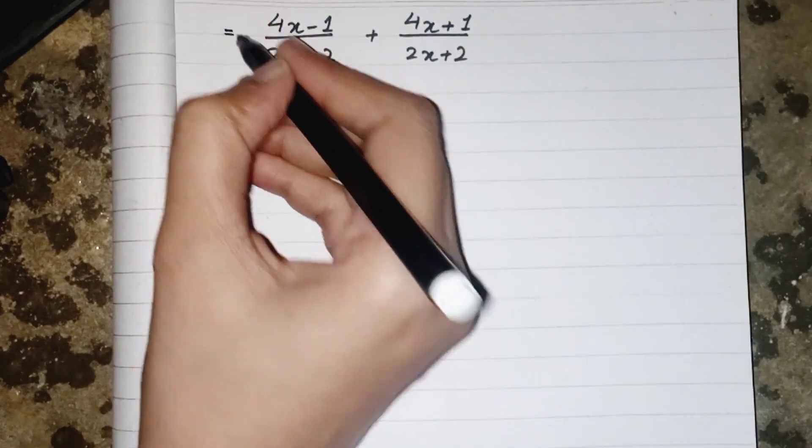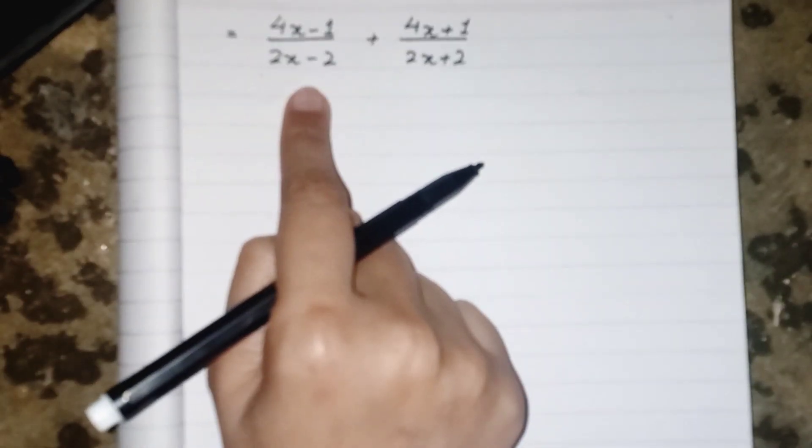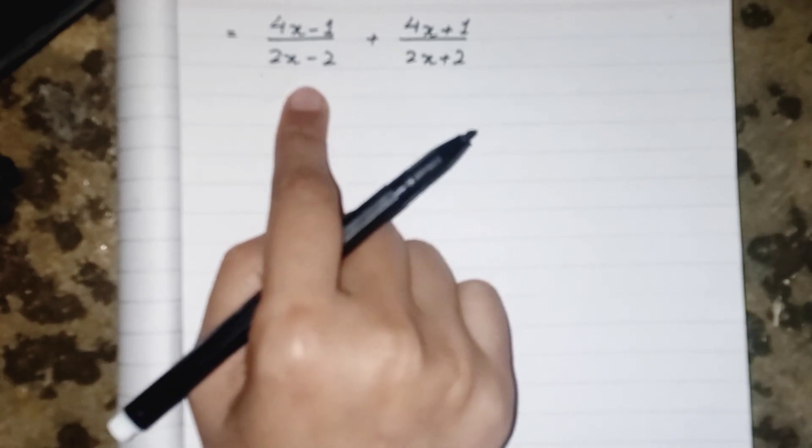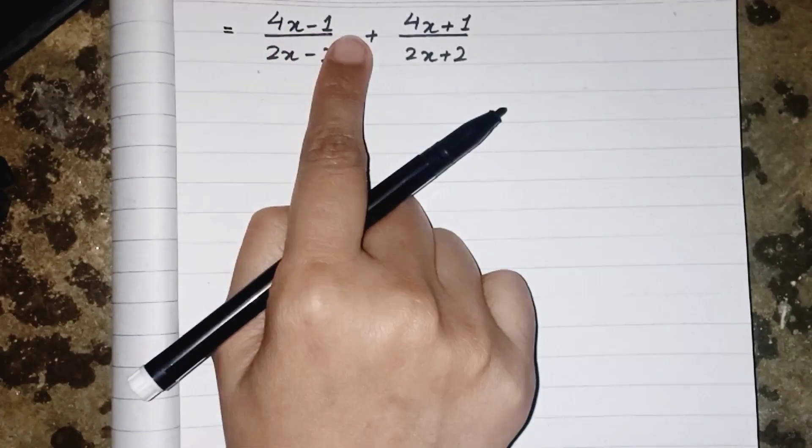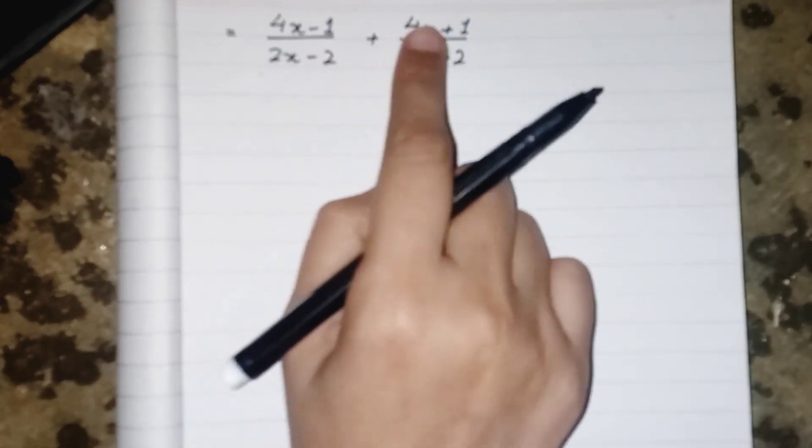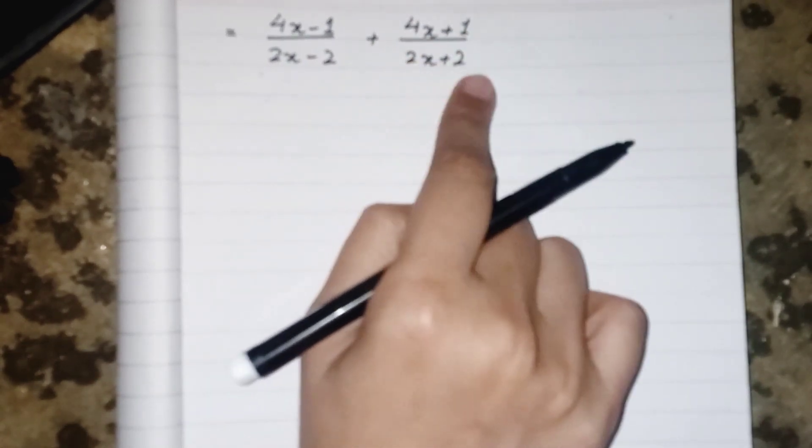Hello everyone, we have to solve this expression which is a partial fraction in which I have 4x minus 1 upon 2x minus 2 plus 4x plus 1 upon 2x plus 2.